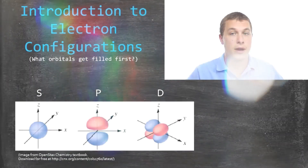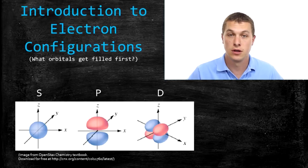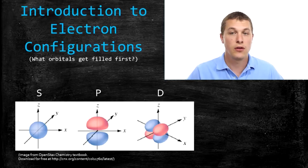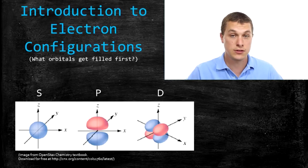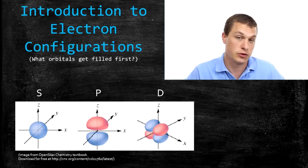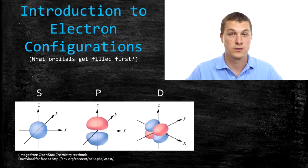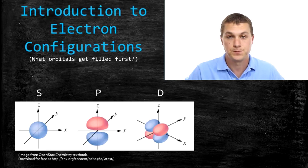What we're thinking about here is: if we add an electron around a nucleus, what orbital does it go into? Orbitals are just the different shapes that electrons can be smeared out in around atoms. We have the s orbital, which is just a sphere; the p orbital, which looks like a set of barbells; and the d orbital, which looks kind of like a clover.